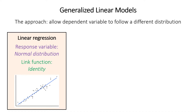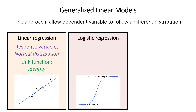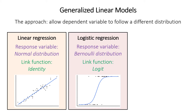So what's our solution? We'll use something called the generalized linear model, which allows the dependent variable to follow some other kind of distribution. We've seen in a previous video that logistic regression is a generalized linear model — in that case the response variable is modeled as a Bernoulli distribution where it's either yes or no, one or zero.